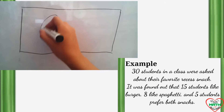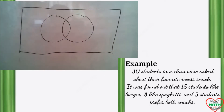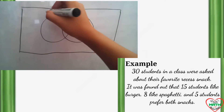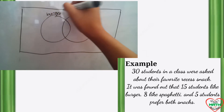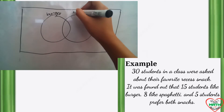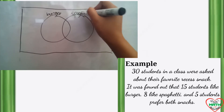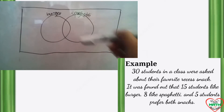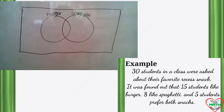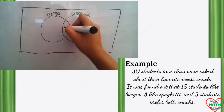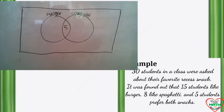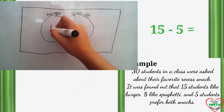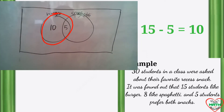Now inside the rectangle, we are going to draw two circles, one overlapping the other. This circle represents the burger and the other one represents the spaghetti. The middle area represents the intersection of the two. Since 5 students prefer both burger and spaghetti, we write 5 in the middle. There are 15 students who like burger and we already have 5 here, so we subtract 15 minus 5 and write 10 here, giving us a total of 15 students who like burger.